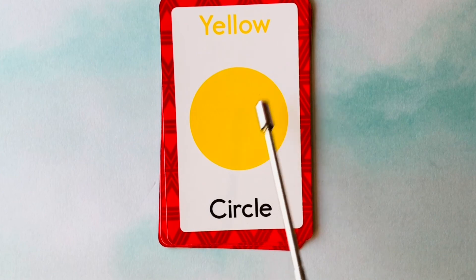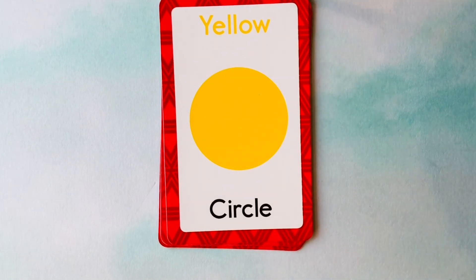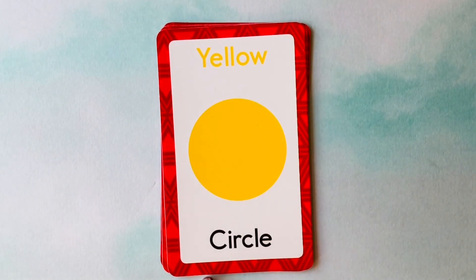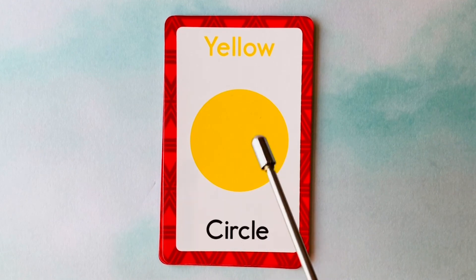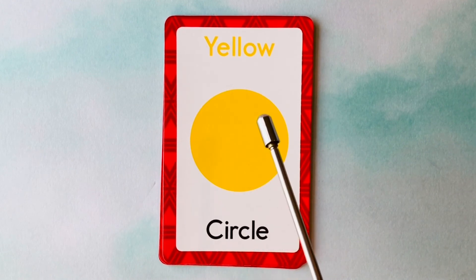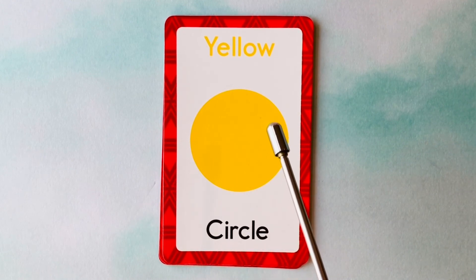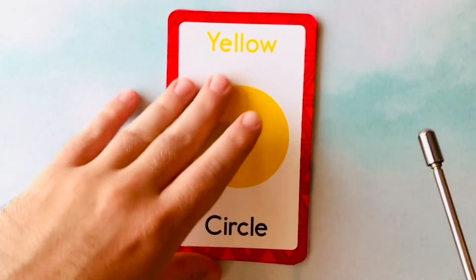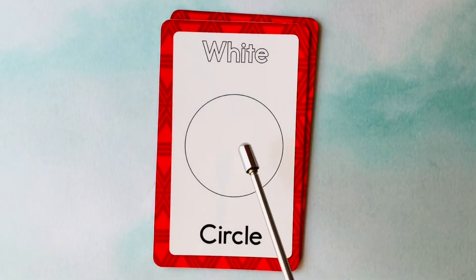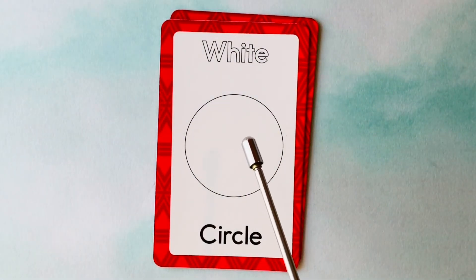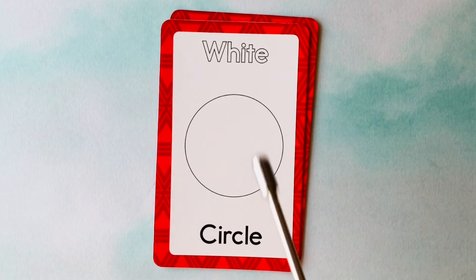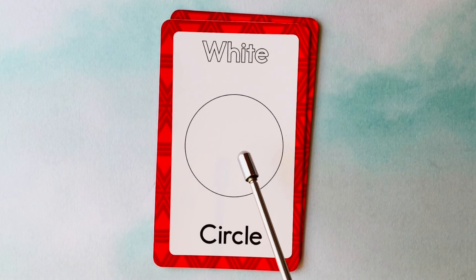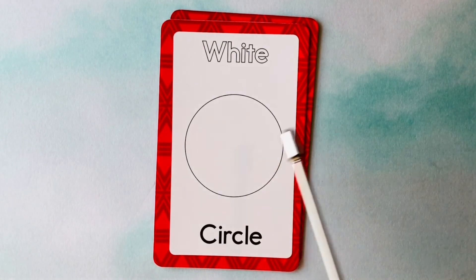This is a circle. What color is this circle? It's a yellow circle. This is also a circle. What color is this circle? It's a white circle.